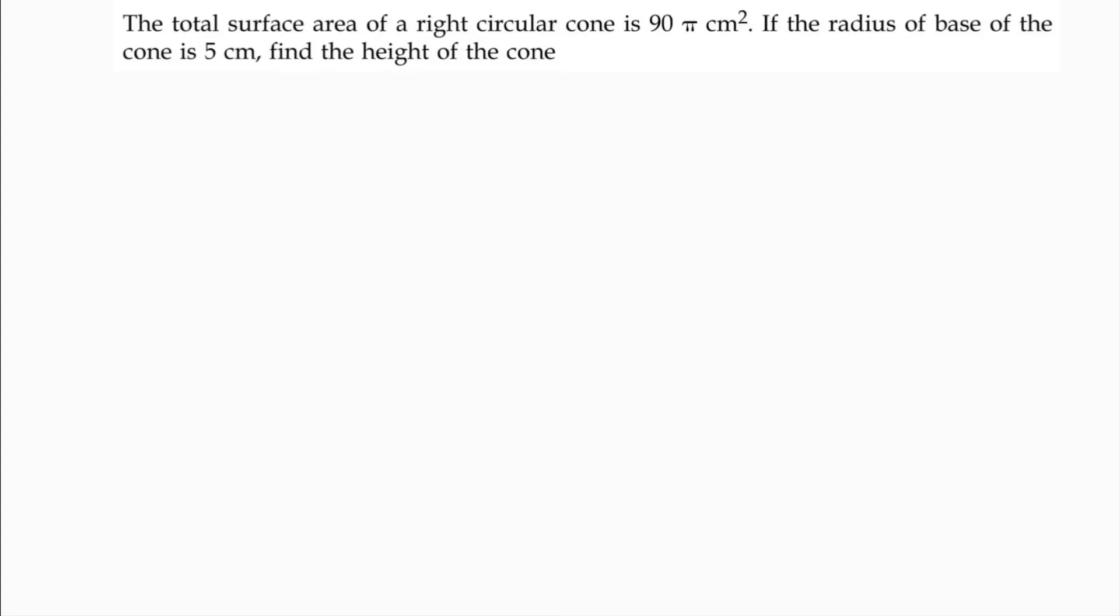The total surface area of a right circular cone is 90π cm². So here, the total surface area of a right circular cone is 90π cm².